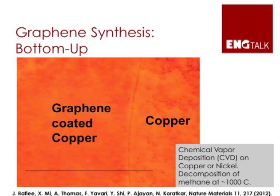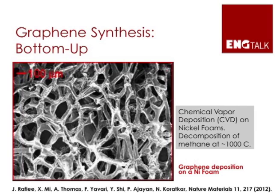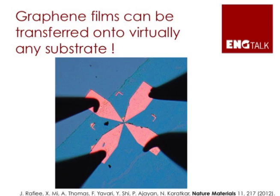The second method is bottom-up, where you assemble graphene atom by atom. This is done in a high-temperature reactor where you flow in a hydrocarbon gas. The hydrocarbon breaks apart and the carbon atoms stick to a suitable substrate like copper. The carbon atoms assemble together to form grains, which grow larger until they merge, giving you a large graphene sheet grown on copper. We can also grow graphene on nickel, and after growing it, we can transfer it onto silicon or any other substrate and measure various properties.